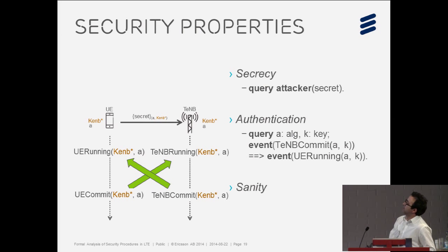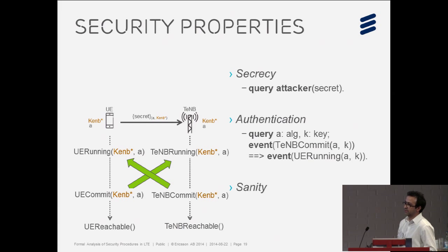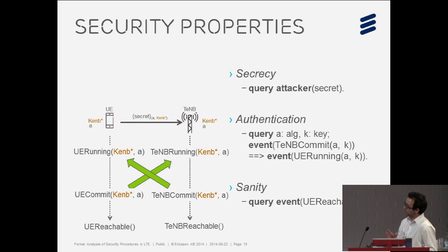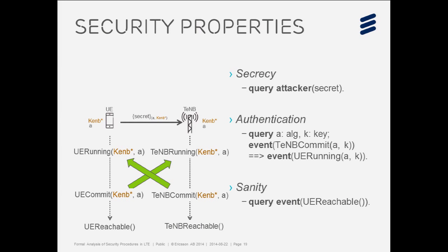We also check a reachability property, which is not really related to security but ensures we can run the protocol from beginning to end. We add reachability events at the end of each process macro and query ProVerif for them. If ProVerif fails to prove the negation, it returns a path from beginning to end. This ensures we don't have a deadlock somewhere causing our properties to trivially hold.